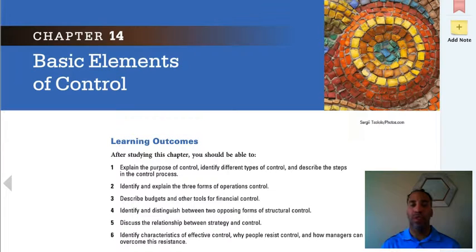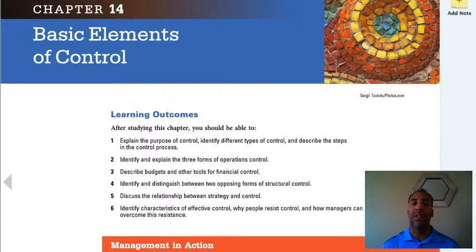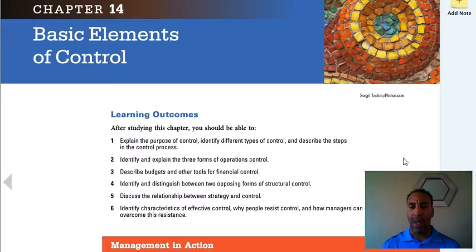Learning outcomes for this chapter are: explain the purpose of control; identify different types of control, and there are many; describe the steps in the control process; identify and explain the three forms of operations control; describe budgets and other tools for financial control; identify and distinguish between two opposing forms of structural control; discuss the relationship between strategy and control; identify characteristics of effective control, why people resist control — that is a big problem in organizations — and how managers can overcome this resistance.